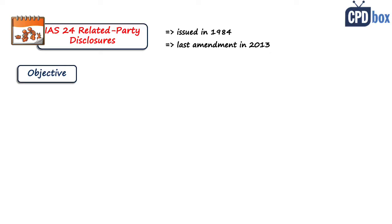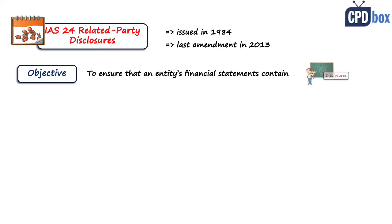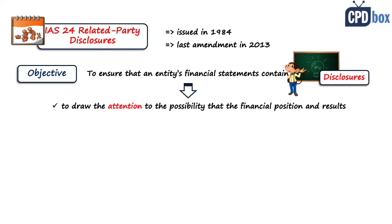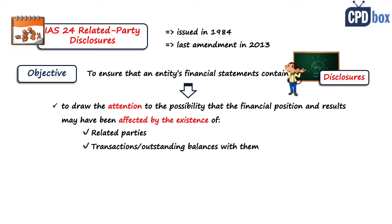The objective of IAS 24 — let me quote the standard here — is to make sure that an entity's financial statements contain the disclosures necessary to draw attention to the possibility that its financial position and profit or loss may have been affected by the existence of related parties and by transactions and outstanding balances, including commitments with such parties. In other words, you should be aware that a business might be affected by related parties and how.